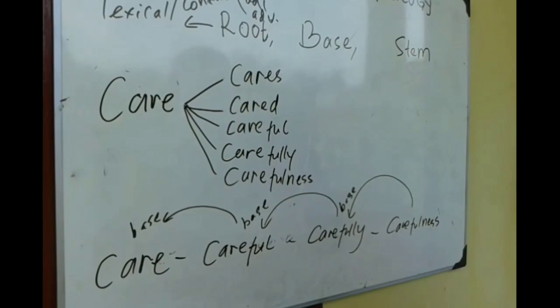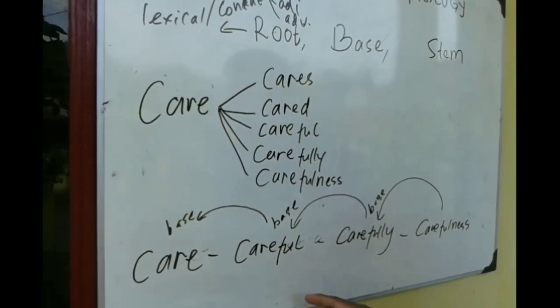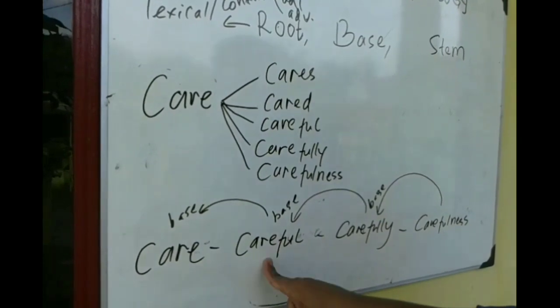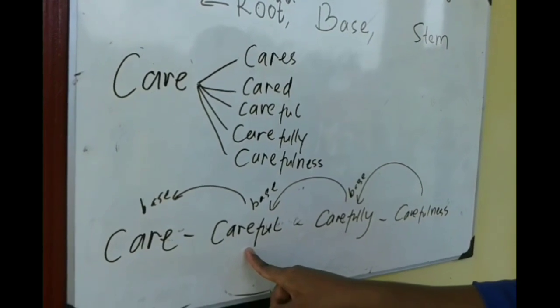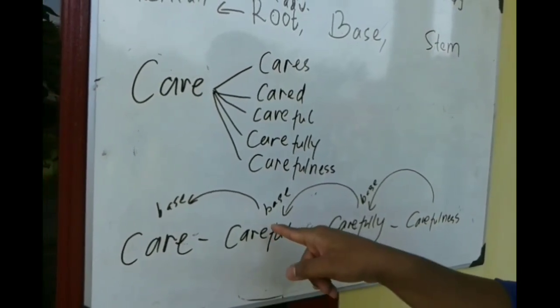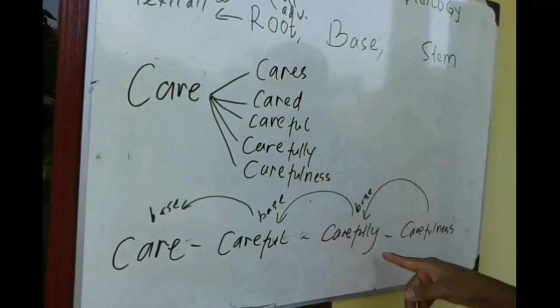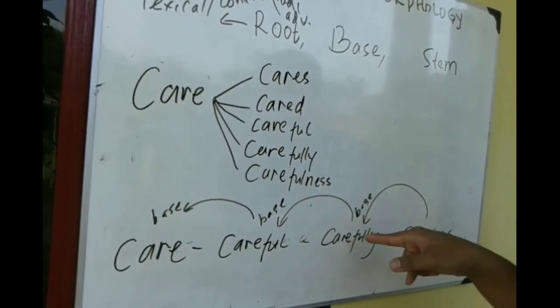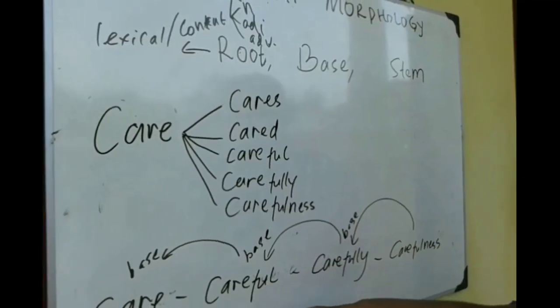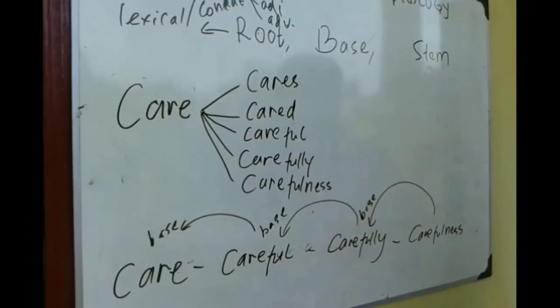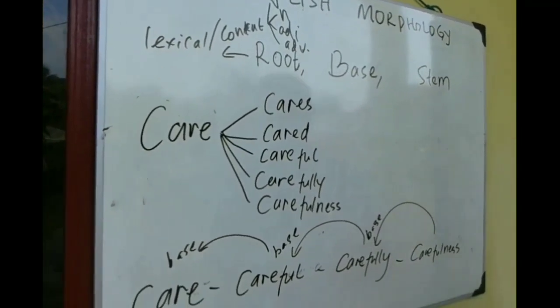Base here is a word that other morphemes or affixes are attached. This is a word. And we add morpheme or affix at the end of a word. Then it becomes base for carefully. Then carefully we add -ness at the end of the word. Then carefully here becomes base for carefulness. The conclusion for base is a word that other morphemes or affixes are attached.